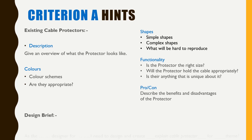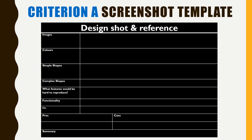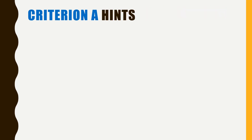Finally, you want to do the design brief. As the designer for the company you're working for, describe the cable protector with the different themes, the focus, and how it resolves the situation you set out in strand one. Use the template to fill in the blanks for each design you're looking at — this helps you capture the images, colours, simple shapes, complex shapes, features that are hard to reproduce, functionality issues, pros and cons, and a summary of the particular design.